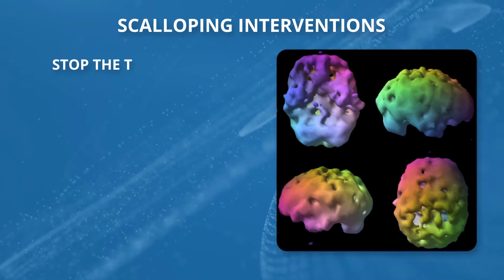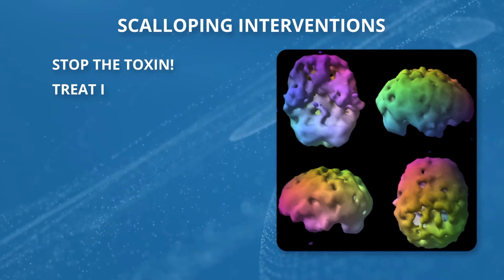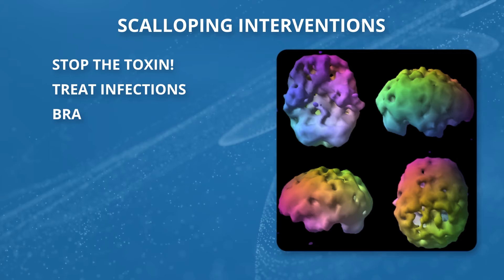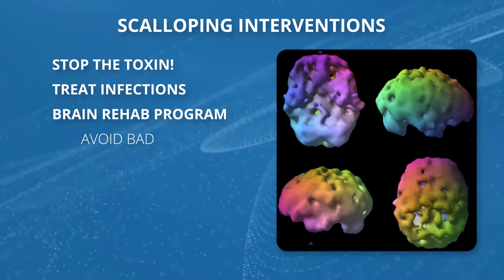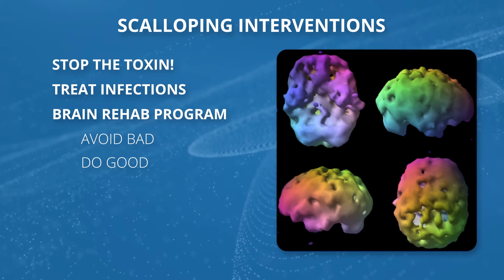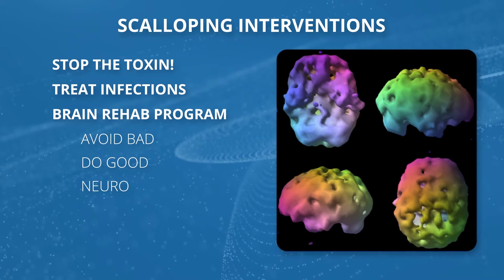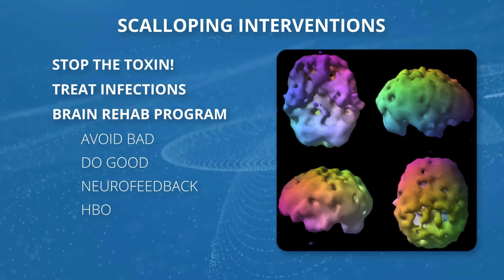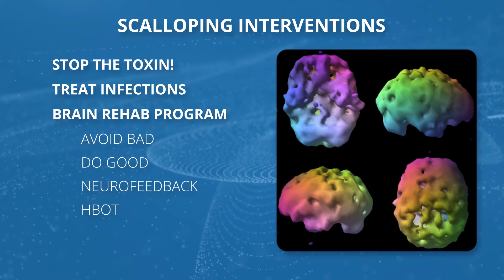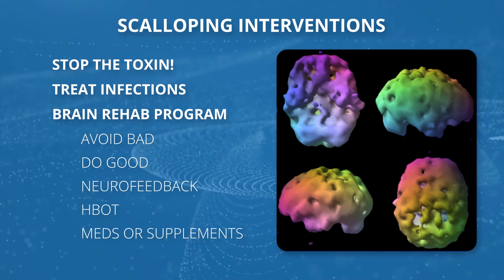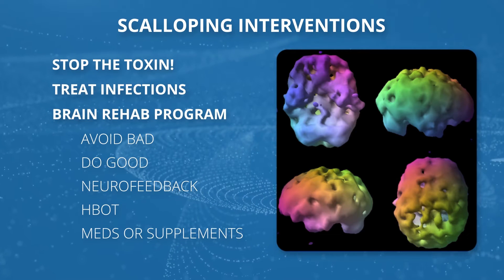When we see this pattern, the first thing is find and stop the toxin, treat infections, and then work on rehabilitating the brain. That means putting the brain in a healing environment — care about it, avoid things that hurt it, do things that help it. Other treatments we like include neurofeedback, hyperbaric oxygen, and supplements such as a multivitamin, fish oil, and brain boost, which can make a significant difference.